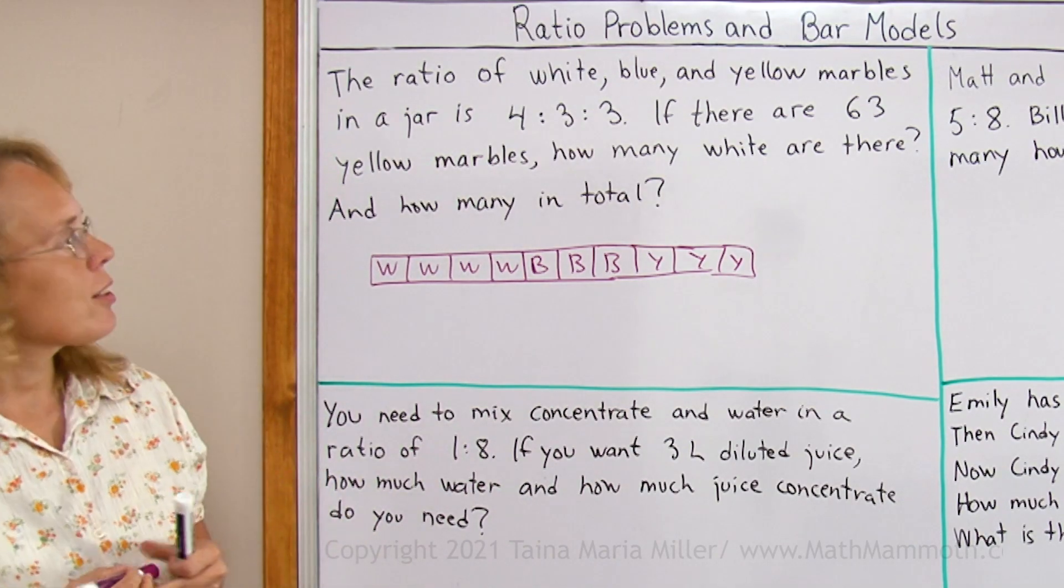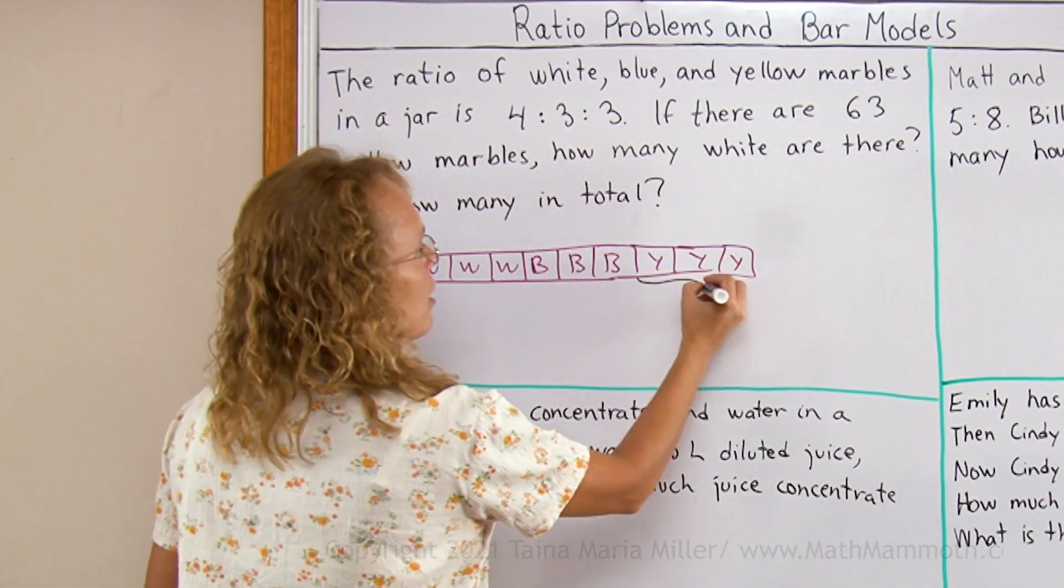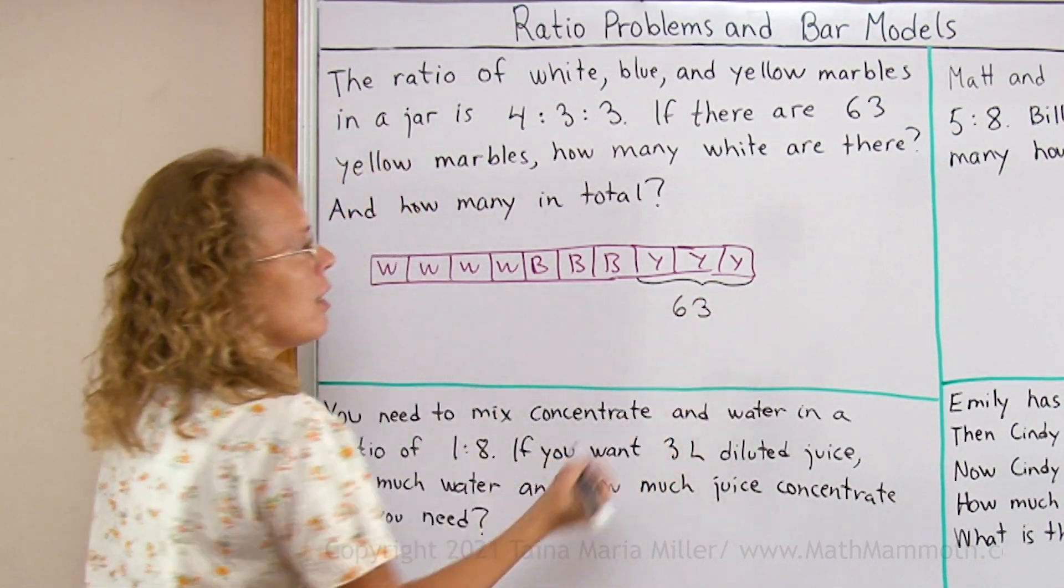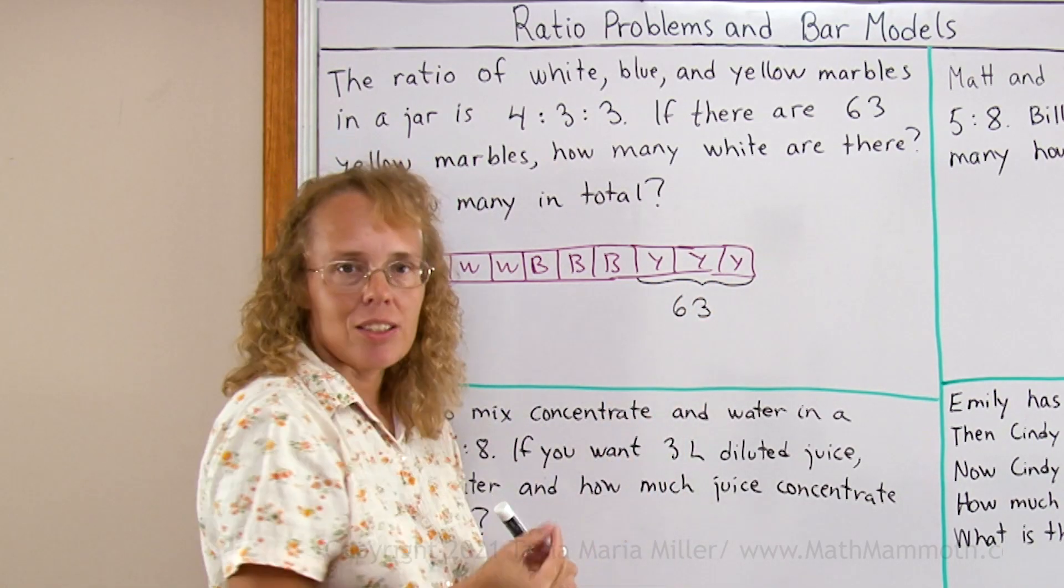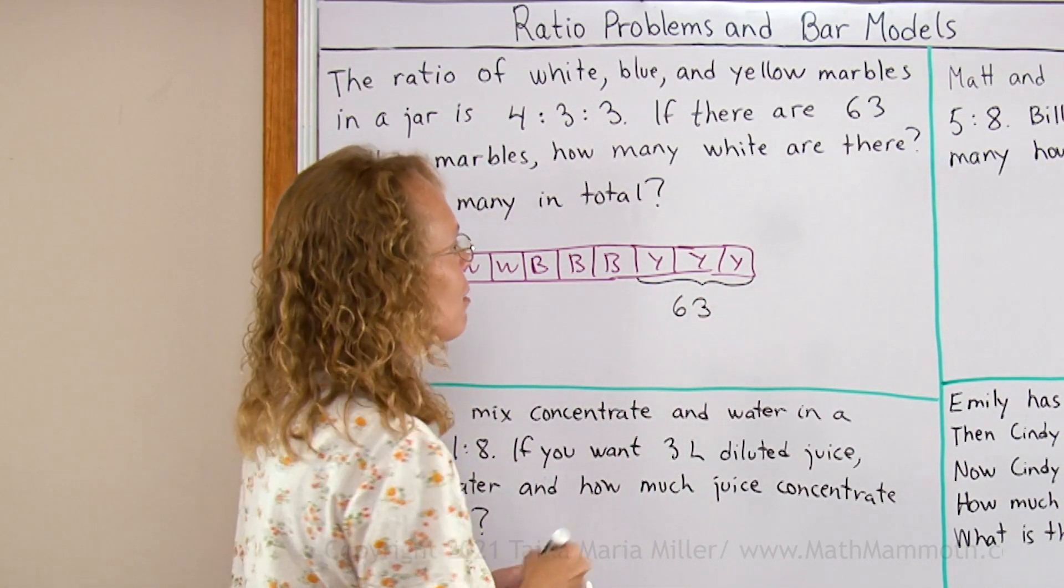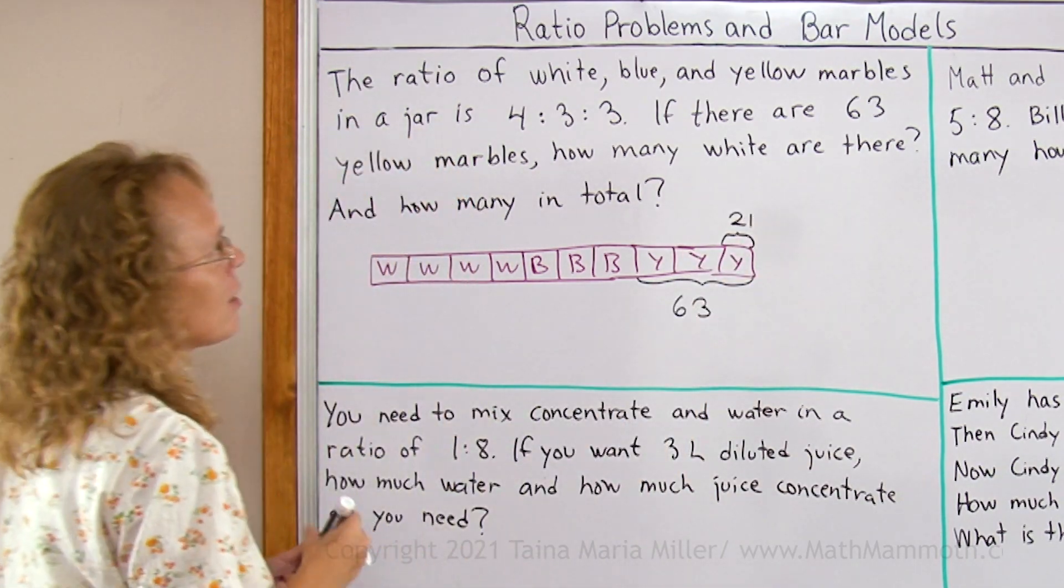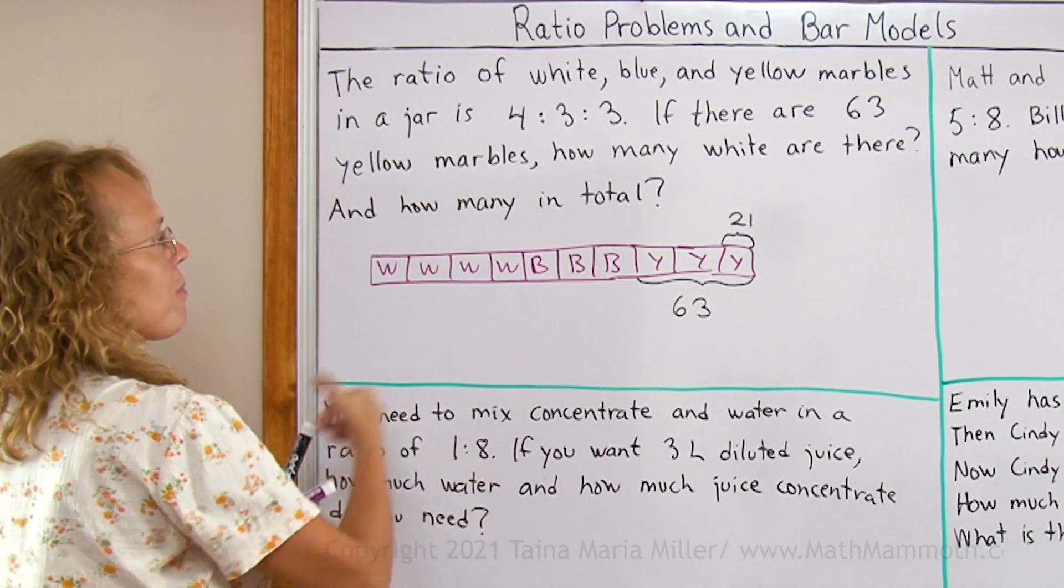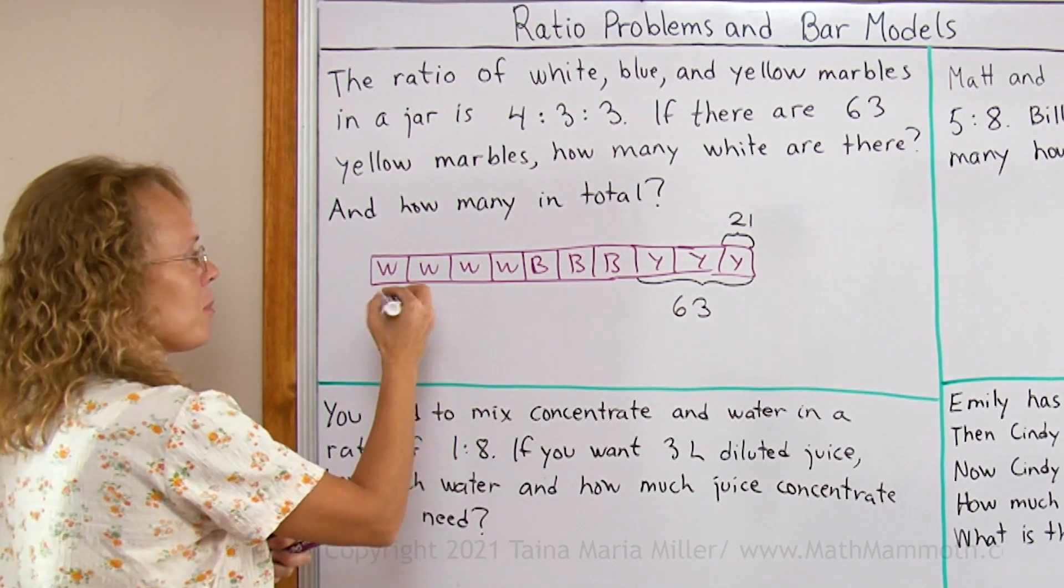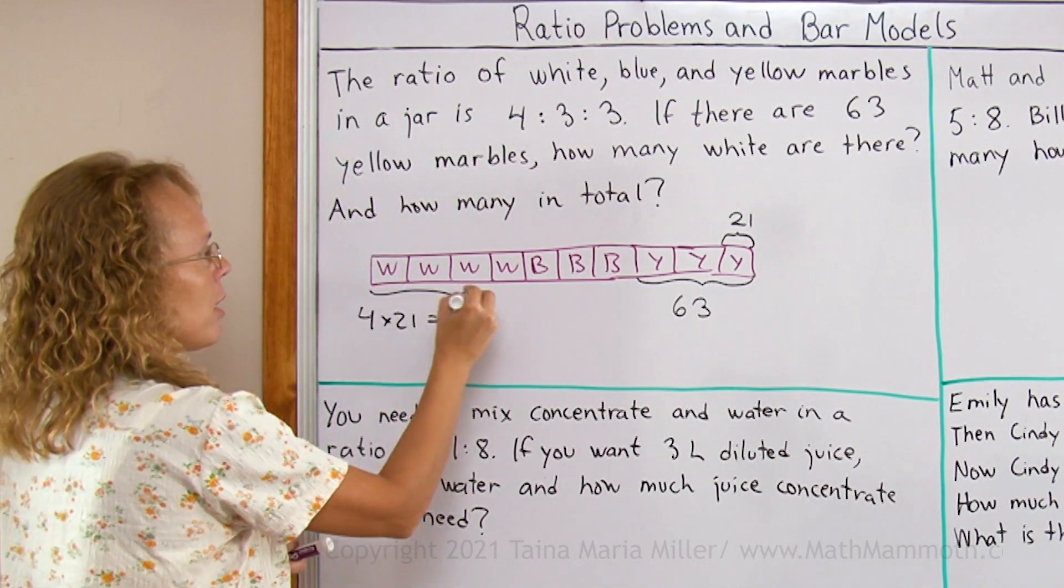And then the information that I'm given is that there are 63 yellow marbles. These here are 63. And now I just solve how much is one of those blocks in my model. It would of course be 63 divided by 3 which is 21. So one block is 21 and so therefore now it's easy to find out how many white are there. There would be 4 times 21.